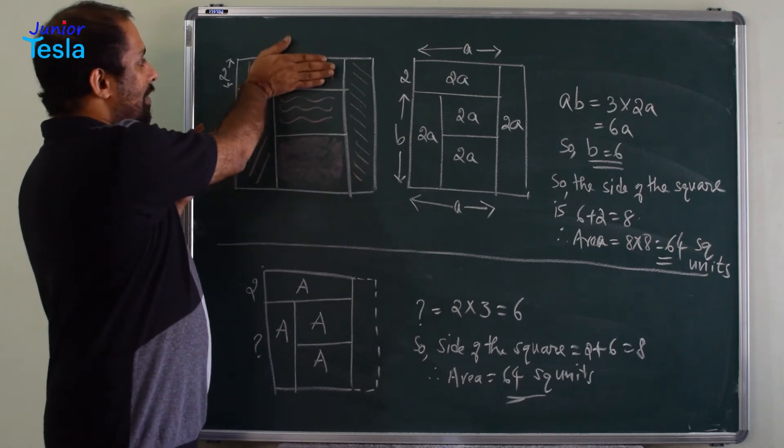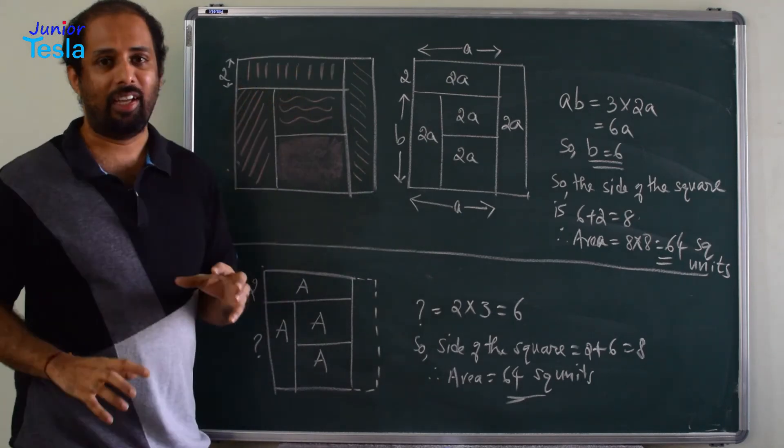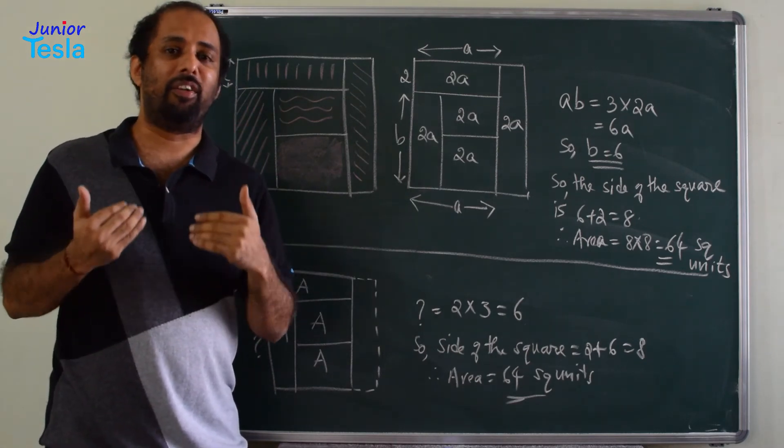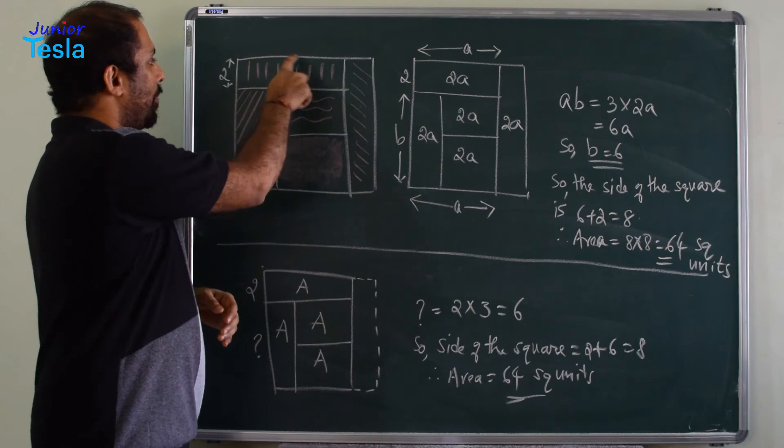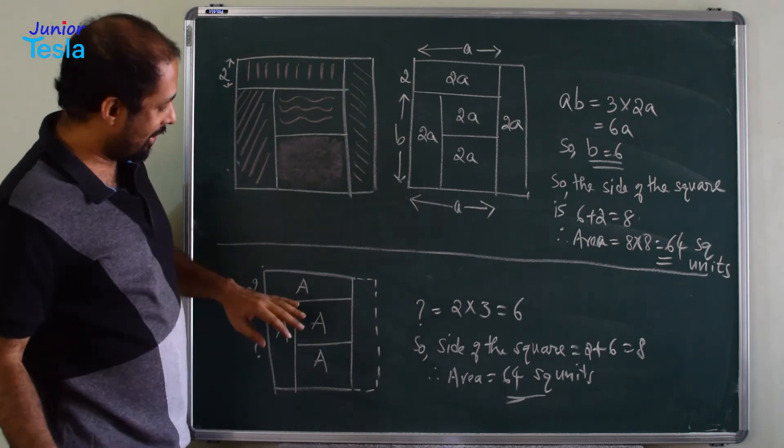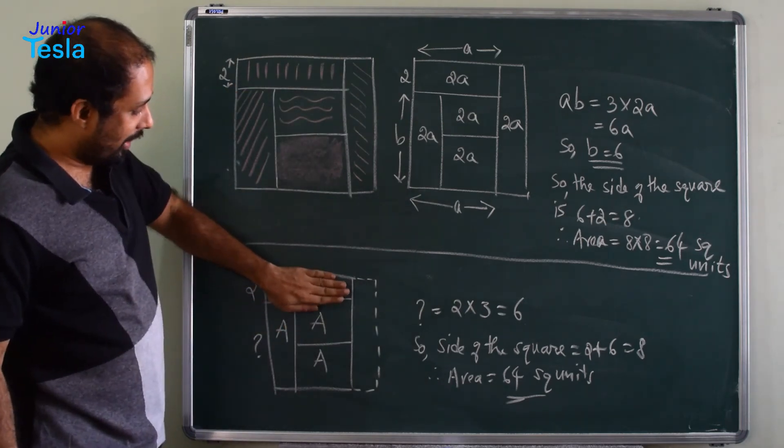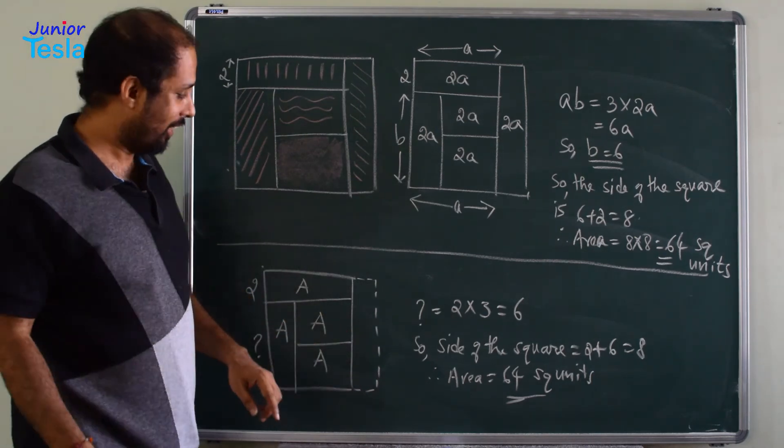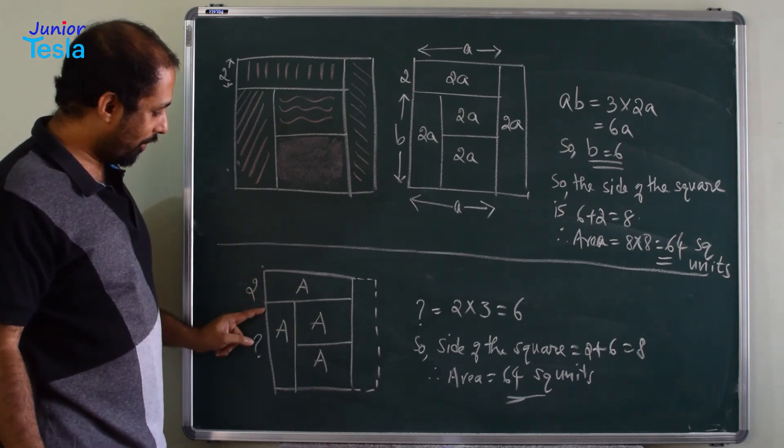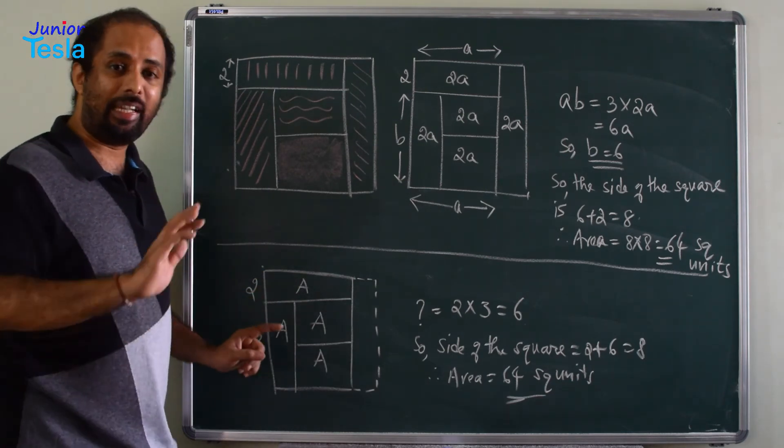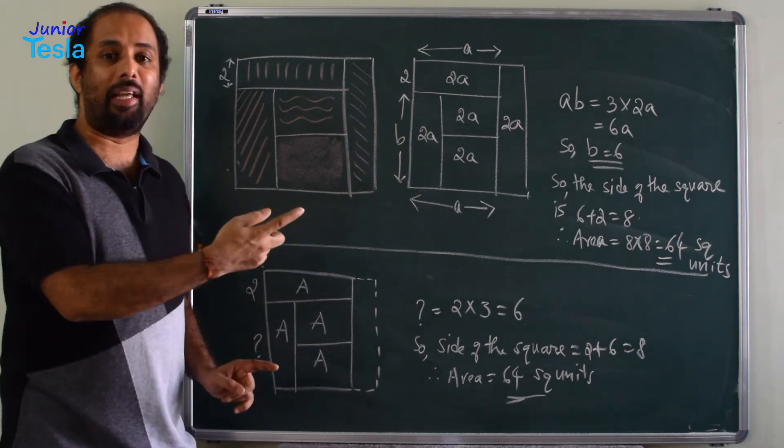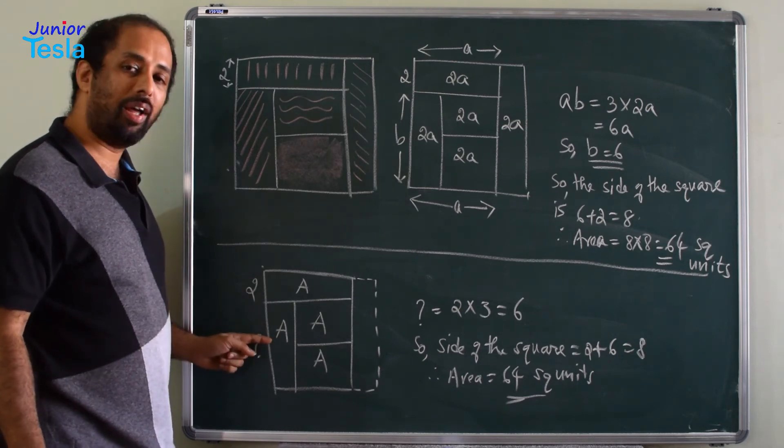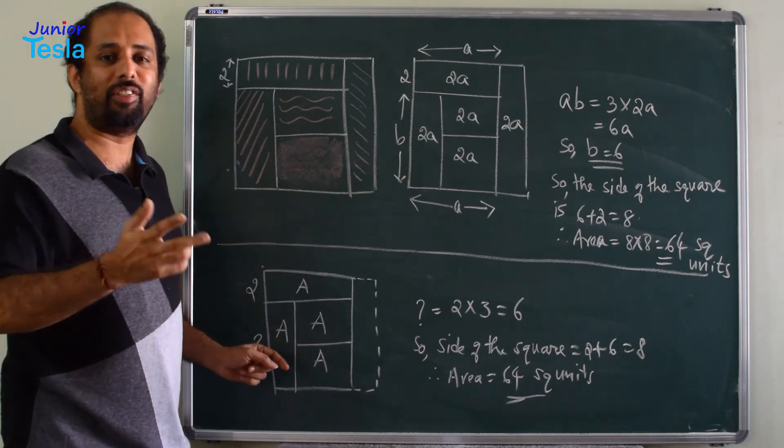Now, if you take this as one region and this entire thing as second region, then these two regions have same length but different width. They have same length but different width, right? So one has the area A, the remaining, the second region has the area A plus A plus A which is equal to 3A. Now, this has the width 2, therefore, definitely this must have the width 3 times 2 because both of them have the same length, only the width is changing, correct? So if this has width 2, then this should have width 3 times 2 which is equal to 6.